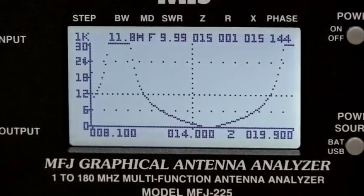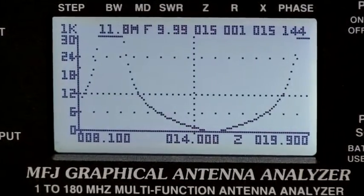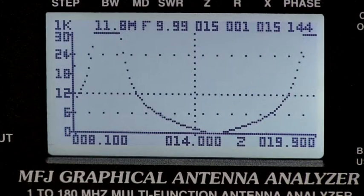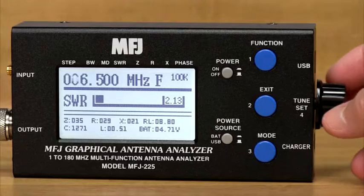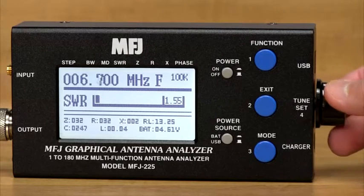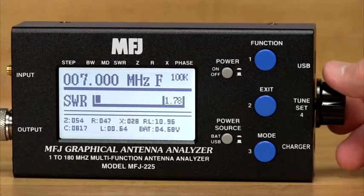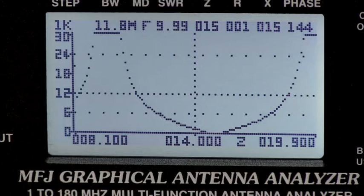You get the big picture every time with MFJ-225's built-in backlighted 3-inch LCD graphic display. Make fine circuit adjustments using full-screen, easy-to-view SWR bar graph. Capture vivid swept displays for SWR, impedance, return loss, phase angle, and more.